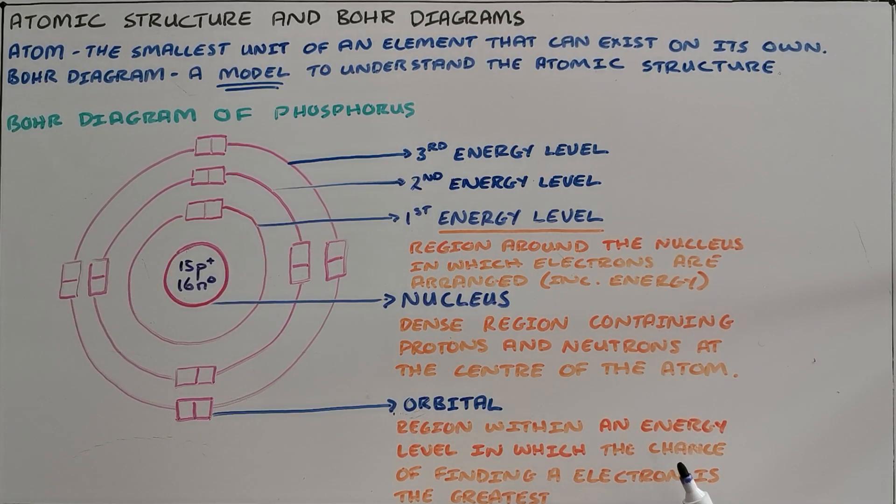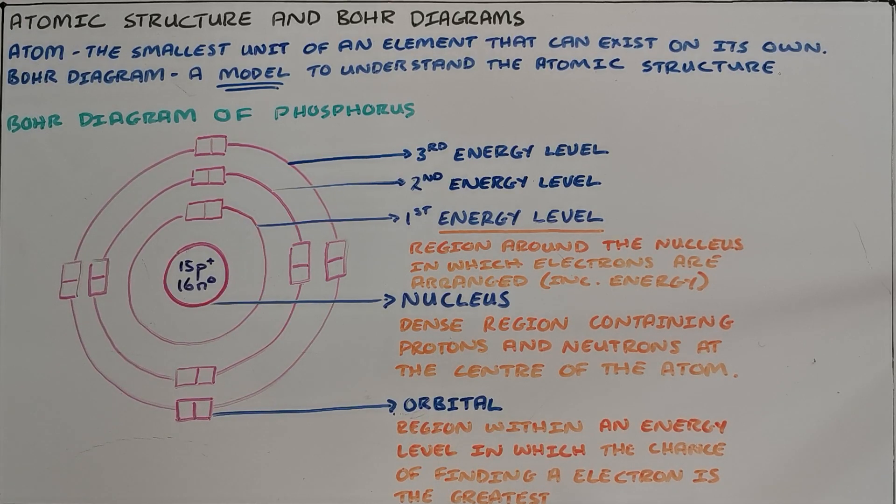What we then find inside each energy level are things called orbitals, which are regions within an energy level in which the chance of finding an electron is greatest. Important to note here that we refer to the chance of finding an electron. That is because the electrons are constantly moving at very high speed. So we can never with certainty say exactly where that electron is. We talk generally about the probability of finding an electron in a specific area.